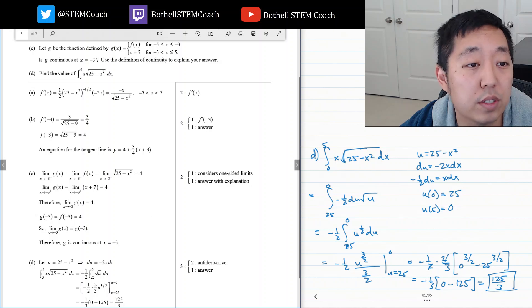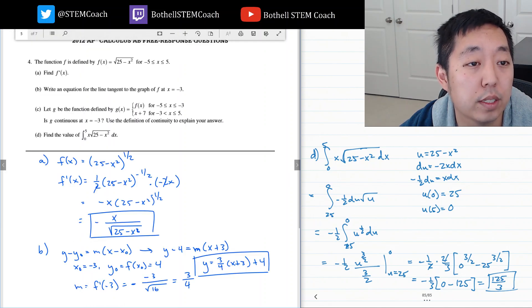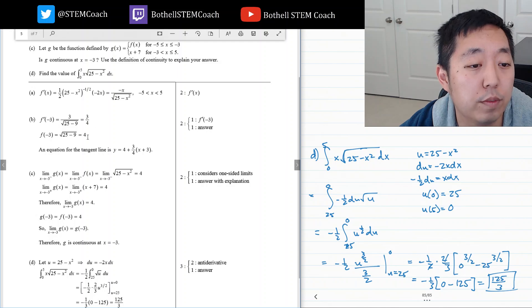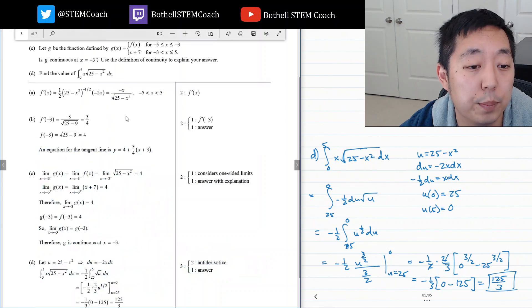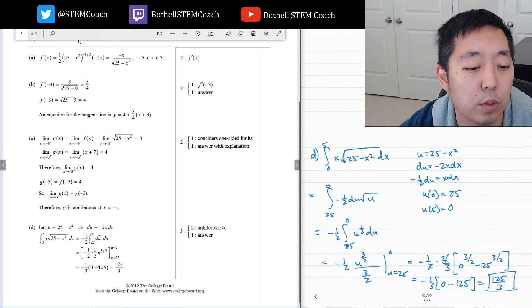Negative x over 25 minus x squared. That's what we got. That's correct. 3 fourths 4, so y equals 4 plus 3 fourths x plus 3. Y equals 3 fourths x plus 3 plus 4. Yep. The limit, so yes is continuous because we did the limit from the left, from the right. Therefore the limit, g of negative 3 equals f negative 3 equals 4. That's correct. And 125 over 3. Awesome!